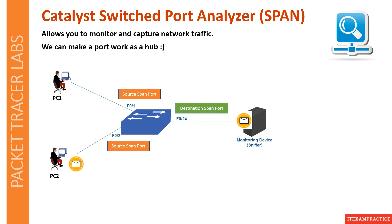This is what you can achieve when you enable SPAN on a Cisco device. Now let's connect to Packet Tracer and enable this feature. I want to create a very similar topology with one switch and two PCs, and I want to capture ICMP.